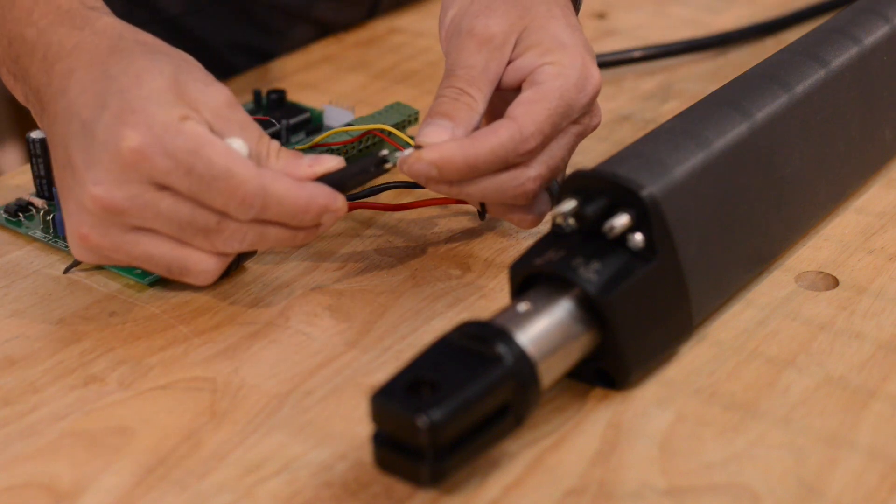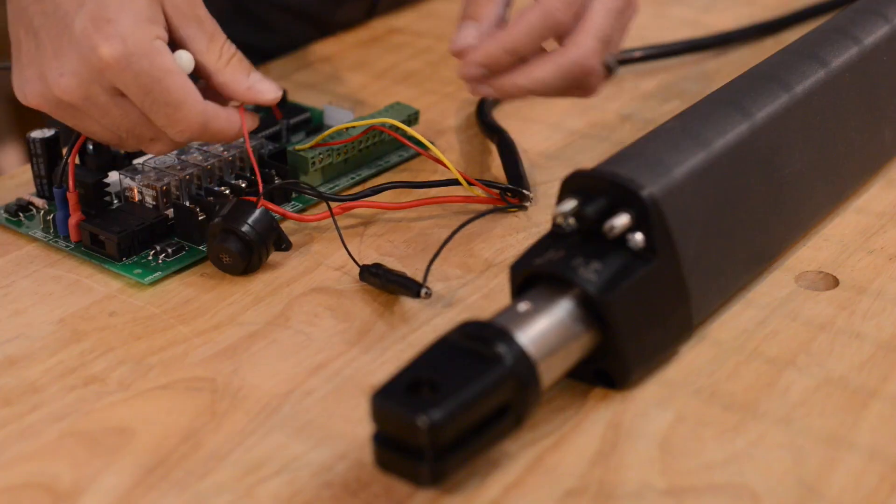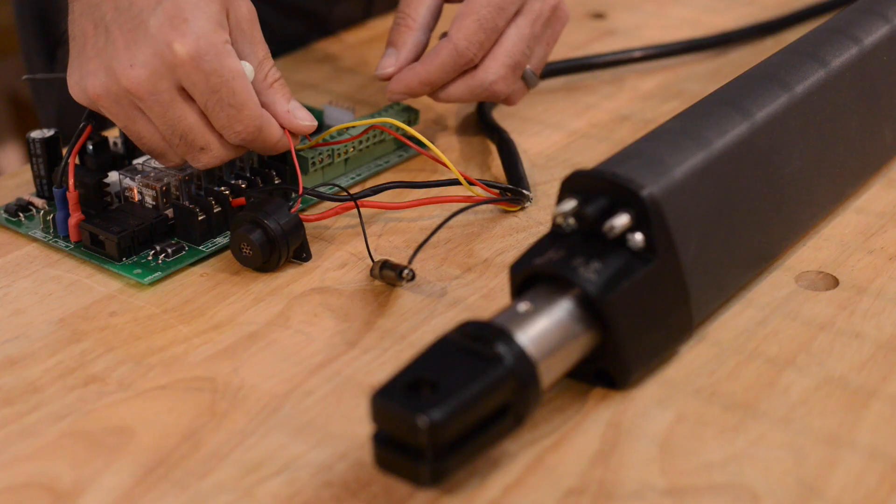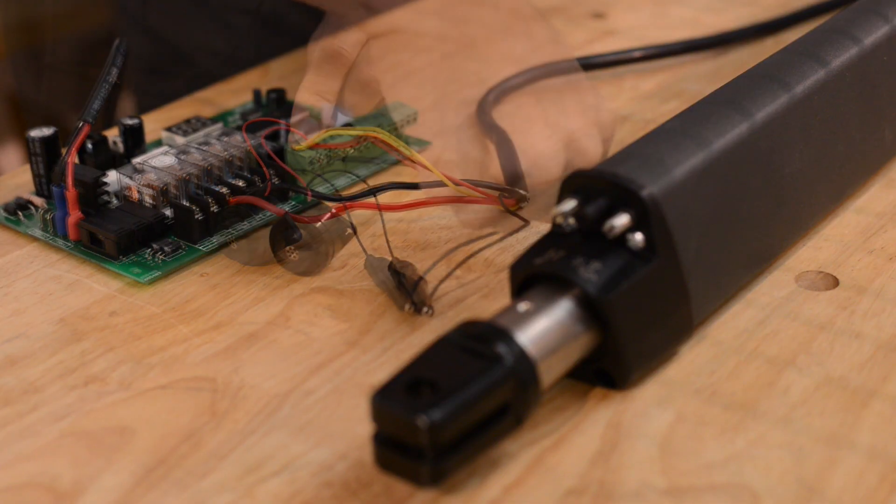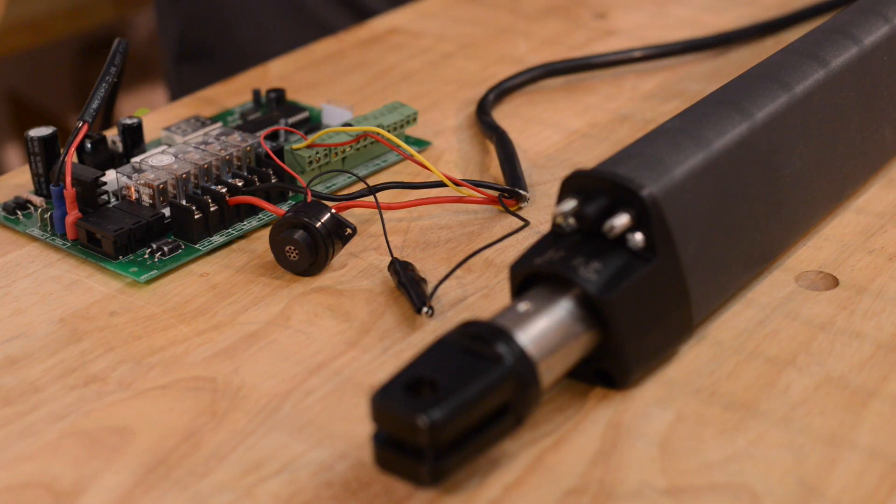Take the wire from that terminal and connect it to the alligator clip. Take the other wire and put it into the terminal. Now repeat the same thing but move your gate towards the closed position.